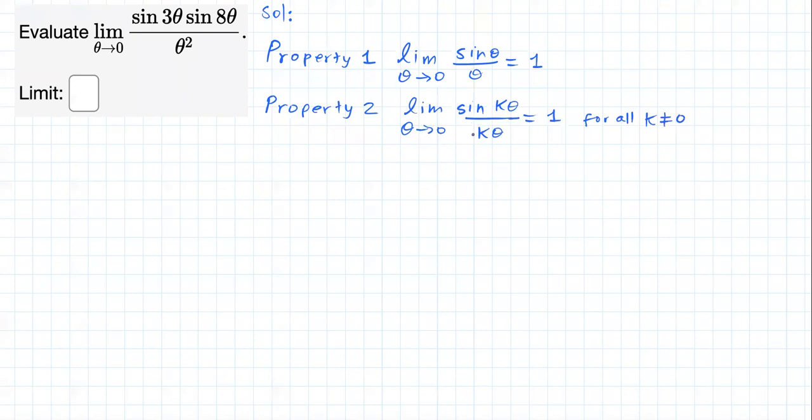And the reason why this is true is because think about it: if theta approaches zero, k times theta also approaches zero. And applying a simple change of variable, we get this second result.